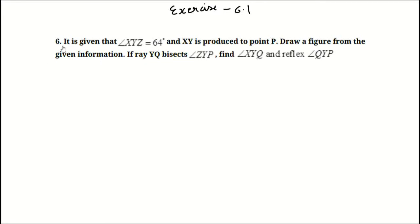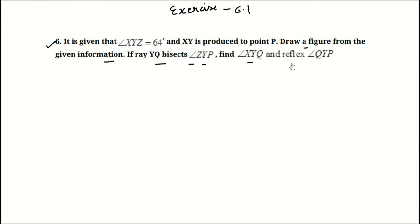Question 6. It is given that angle XYZ is equal to 64 degrees and XY is produced to point P. Draw a figure from the given information. If ray YQ bisects angle ZYP, find angle XYQ and the reflex angle QYP.